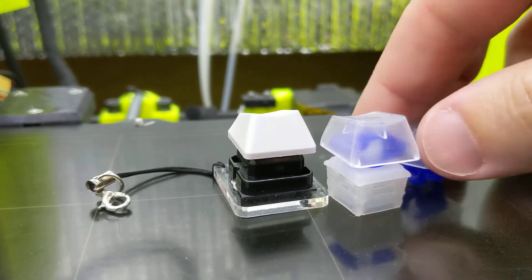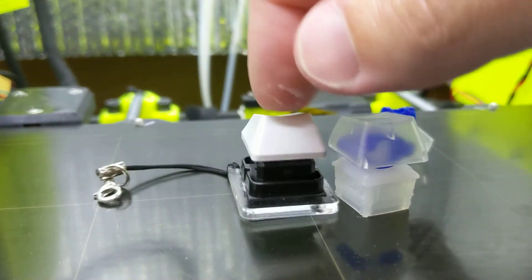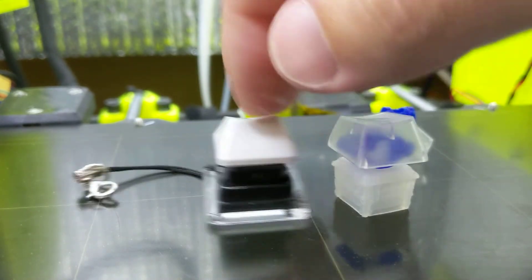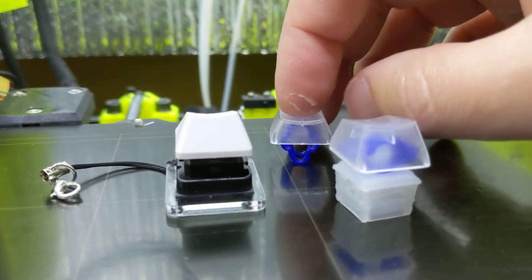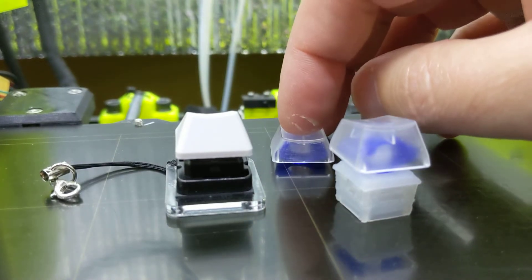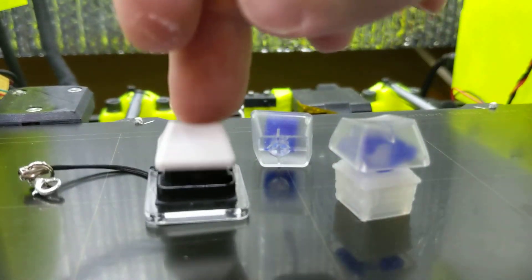These other ones that I've used where it's just the keycap, they're a lighter actuation. This is like a solid bottoming out, right? This is more like a gentle release. And then that bottom part is more like how the Topre feels when you bottom it out.